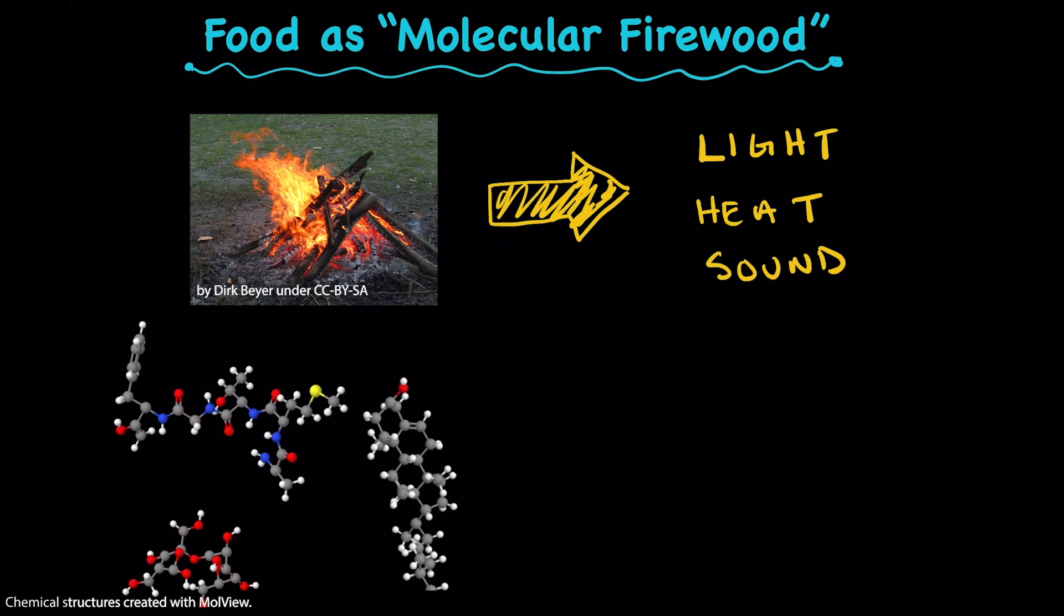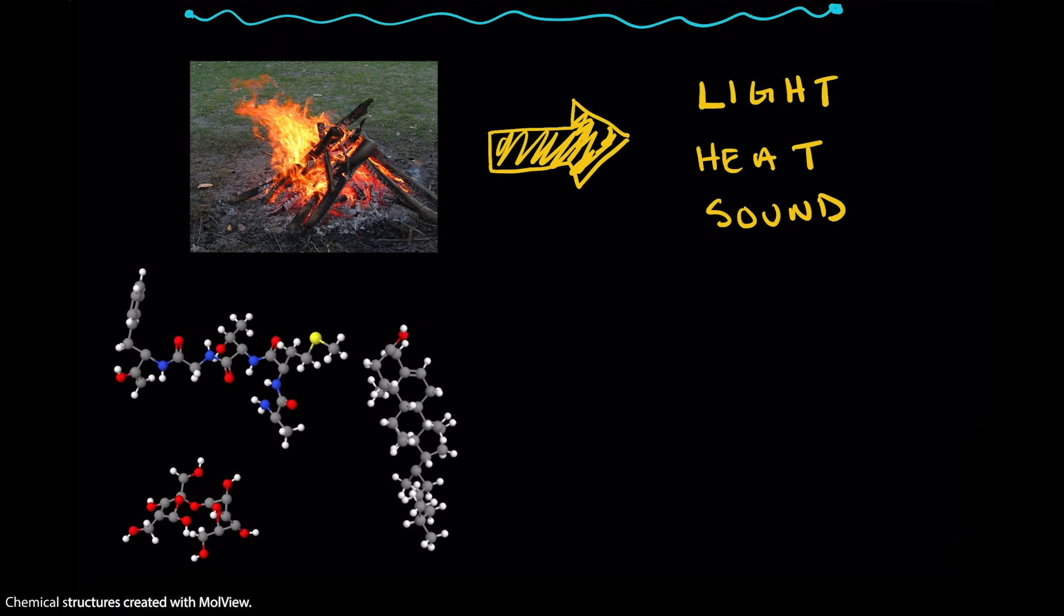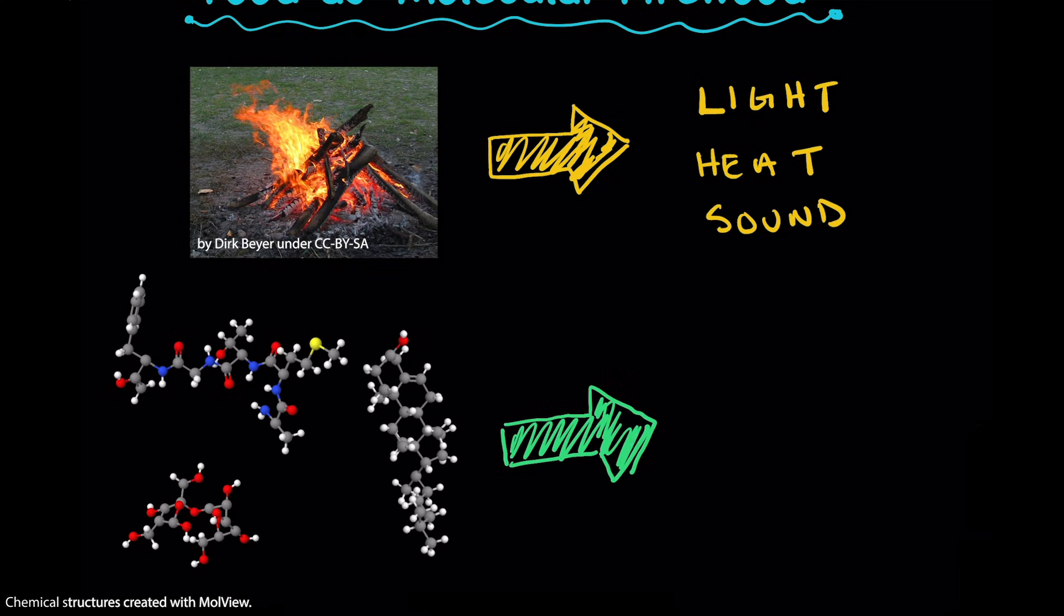So we can take those same food molecules that we broke down before to get building blocks, and instead use them as fuel to generate cellular energy. And then we can use that cellular energy to fuel all of the building that we just talked about.